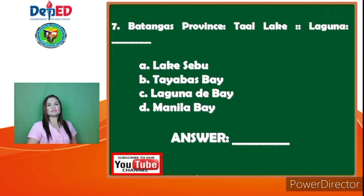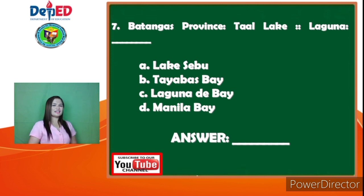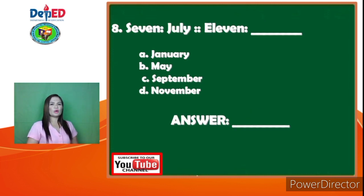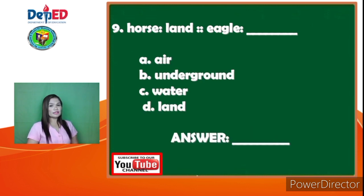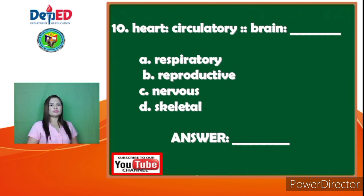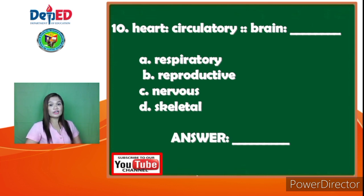Number 7: Batangas Province is to Taal Lake as Laguna is to — A. Lake Sebana, B. Tayabas Bay, C. Laguna de Bay, D. Manila Bay. The answer is letter C, Laguna de Bay. Number 8: 7 is to July as 11 is to — A. January, B. May, C. September, D. November. The answer is letter D, November. Number 9: Horse is to Lawn as Eagle is to — A. Air, B. Underground, C. Water, D. Land. The answer is letter A, Air. Number 10: Heart is to Circulatory as Brain is to — A. Respiratory, B. Reproductive, C. Nervous, D. Skeletal. The answer is letter C, Nervous.